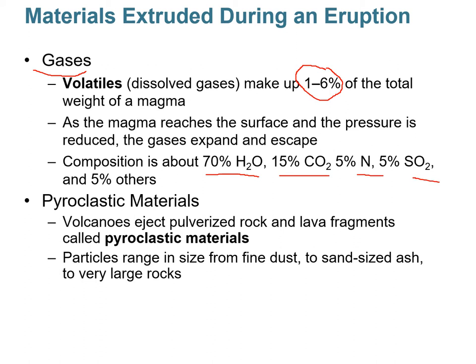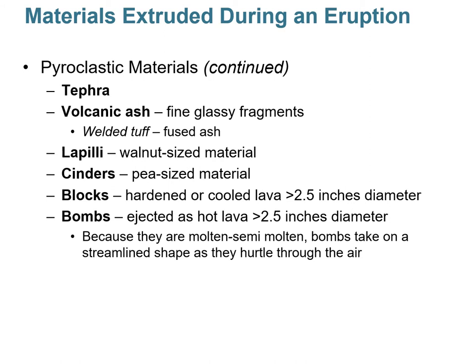The composition of volcanic gases is mostly water — about 70% water, 15% carbon dioxide, then nitrogen and sulfur dioxide. Volcanoes also eject pyroclastic materials: rock fragments that are pulverized and sometimes welded together, shot at really fast rates out of the crater. This material ranges in size from very fine dust — which is dangerous because it's crystallized glass you can breathe into your lungs — to larger sizes.